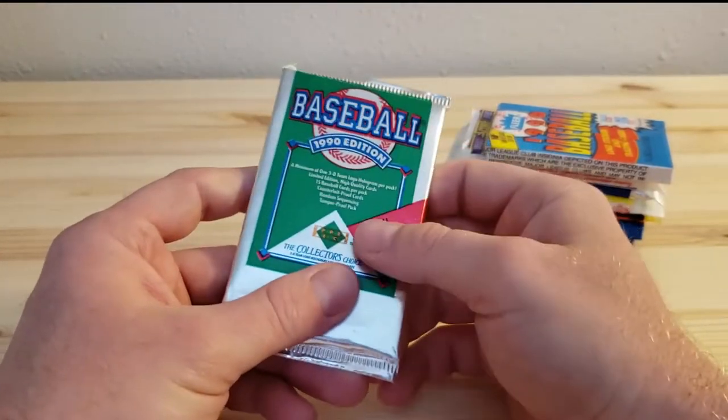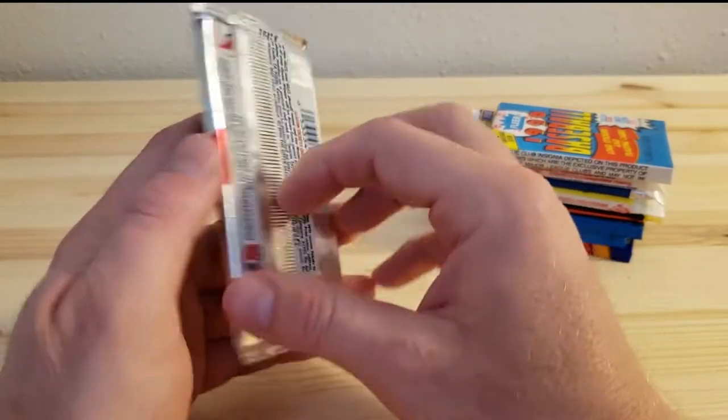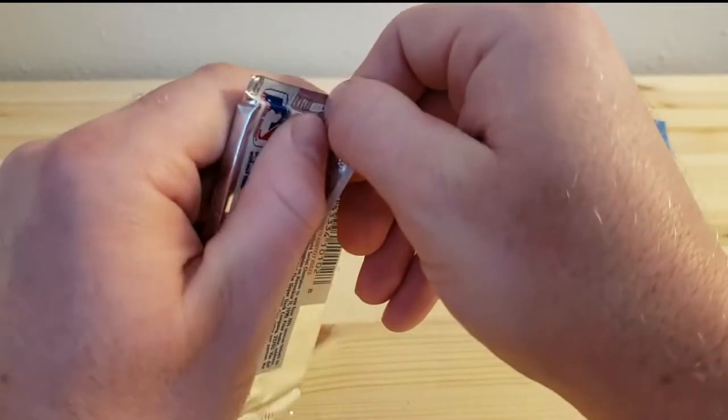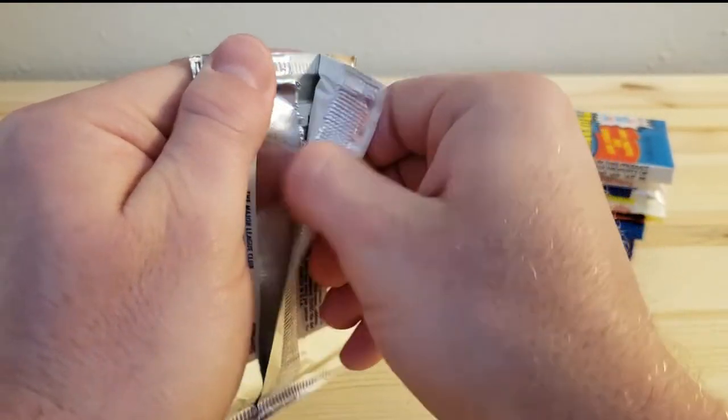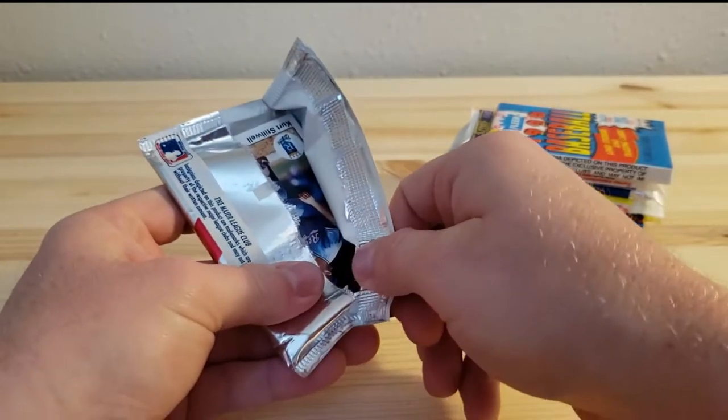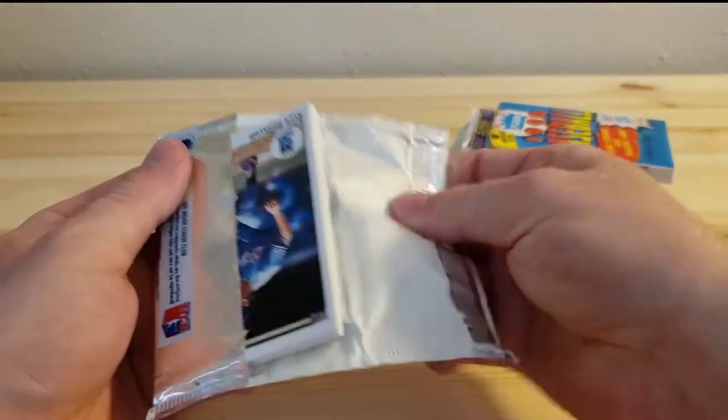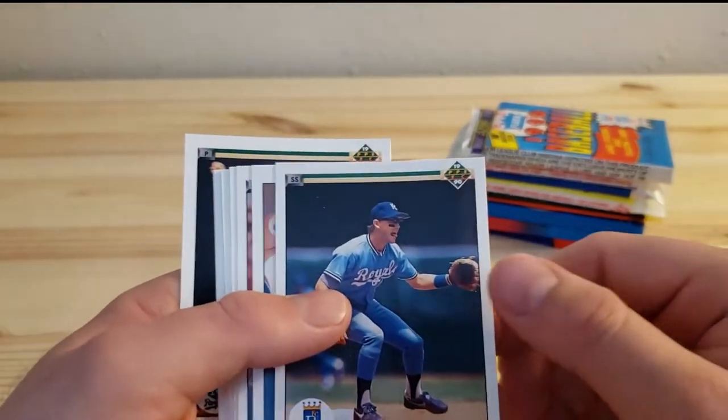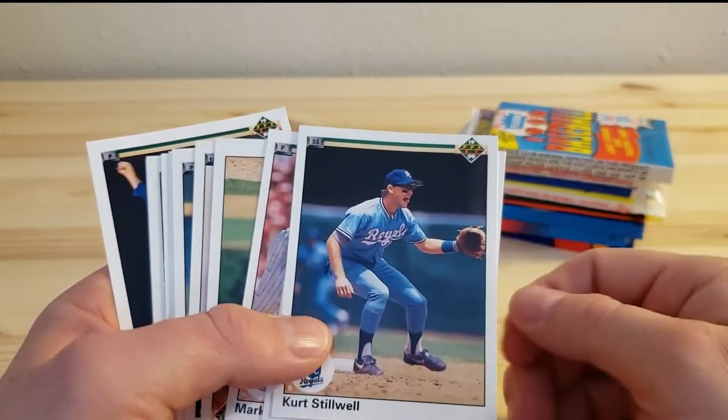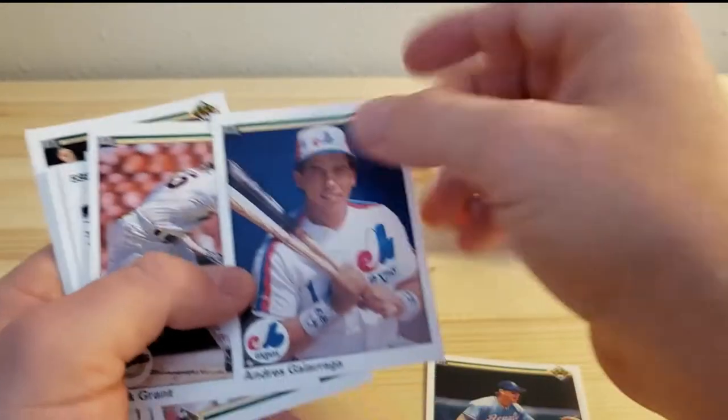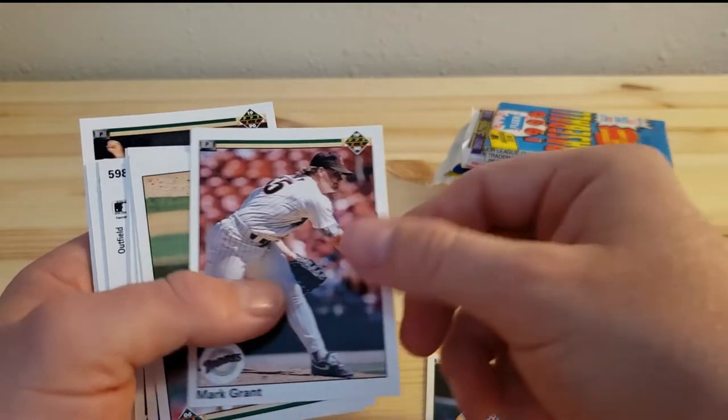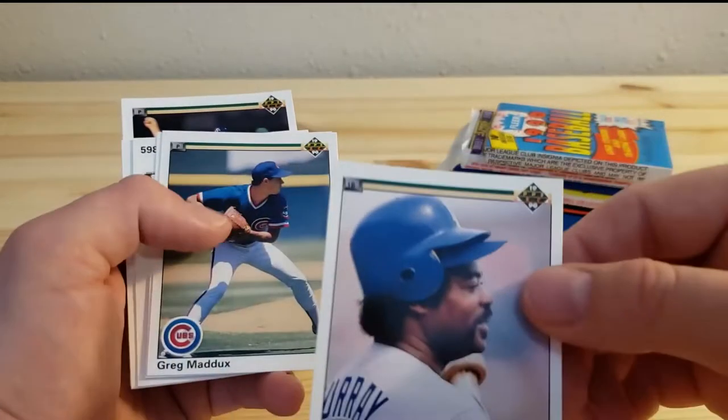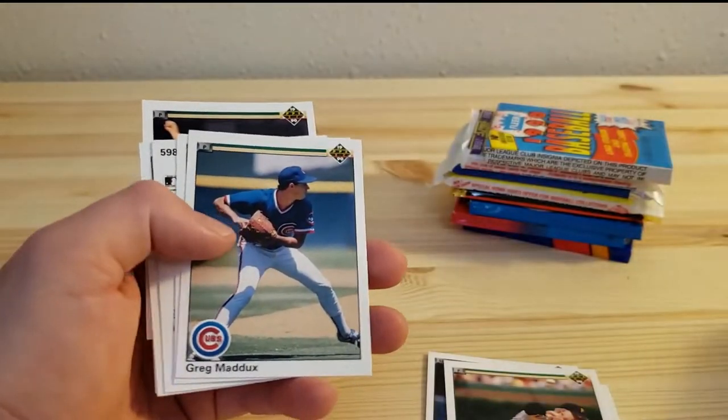We're going to start off with the 1990 Upper Deck Low Series. Looking for Sammy Sosa, Juan Gonzalez, John Olerud, or Larry Walker. Out of those, I think I would prefer the Larry Walker. I really like how these Upper Deck packs open. I actually did not open any of the packs from Series 1. So this is cool. I'm opening a lot of these for the first time.